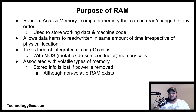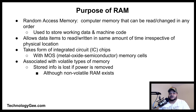In contrast with other direct access data storage media such as HDDs, CDs, DVDs, and older magnetic tapes and drum memory, the time required to read and write data items varies significantly depending on their physical location on the recording medium, due to mechanical limitations such as media rotation speeds and arm movement. In today's technology, RAM takes the form of integrated circuit chips with metal oxide semiconductor memory cells.